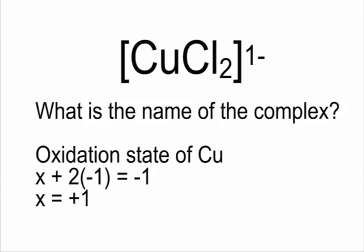So copper is unknown, so it's X. We've got two chloral ions, or chloral ligands, which is minus 1 each. So it's 2 times minus 1. And the whole complex is charged. It has a charge of minus 1, so therefore it is equal to minus 1. So solving for X, you can see that the oxidation state for copper is plus 1.